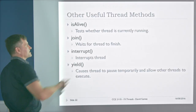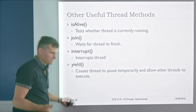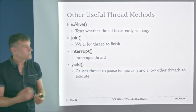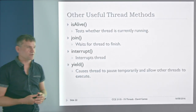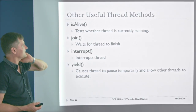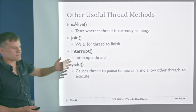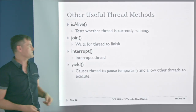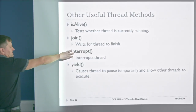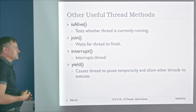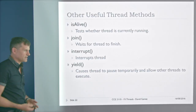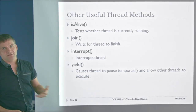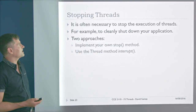Some other useful Thread methods: isAlive() tells you whether the thread is running. join() is a blocking call that waits for a thread to finish — useful when you need to shut the system down and wait for a thread to complete. interrupt() can wake a thread from sleep or stop it from running. yield() allows other threads to execute if one thread is using too much CPU time — relevant when avoiding starvation.